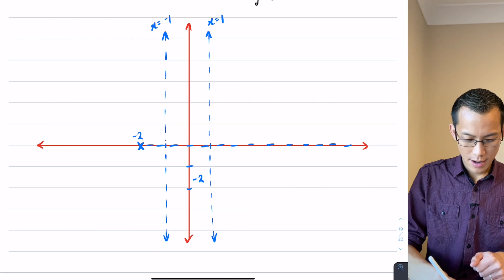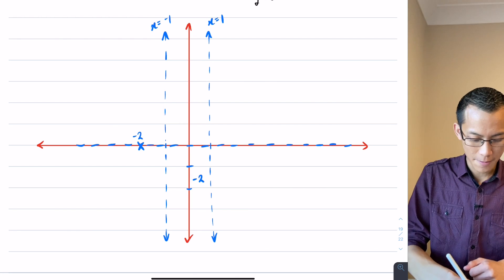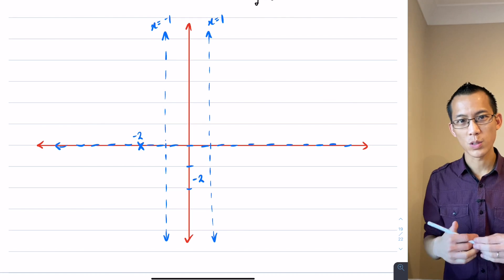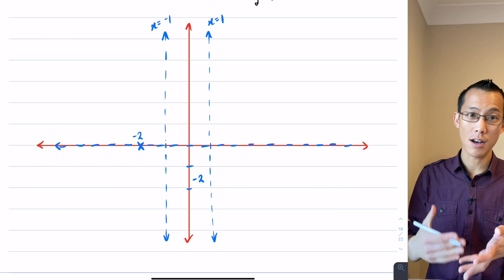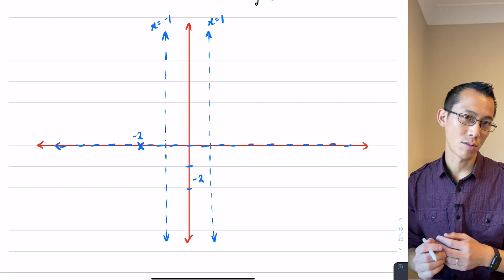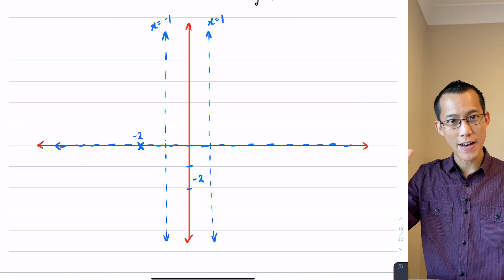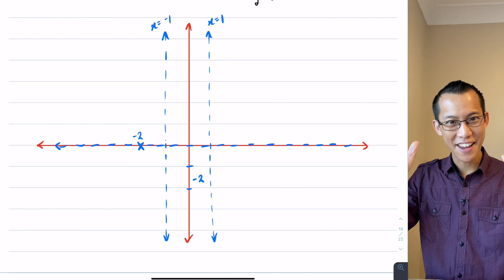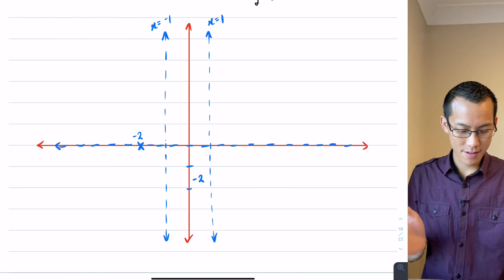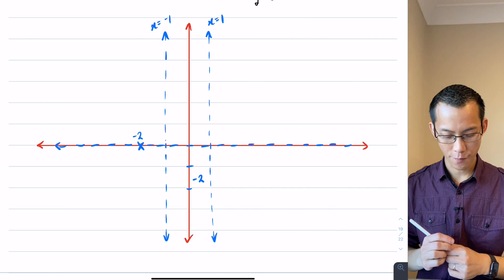Now we already worked out an x-intercept before. It was like the first thing that we calculated, but we also found that y equals zero was a horizontal asymptote. So this is an example of a graph that passes directly through its horizontal asymptote. The horizontal asymptote only tells you about the extreme values, the very far left and the very far right. In the middle of the graph the horizontal asymptote doesn't tell you anything, so you can intersect right through it just like we were seeing before.